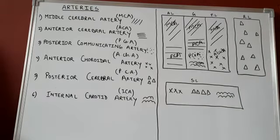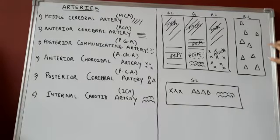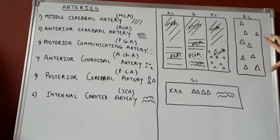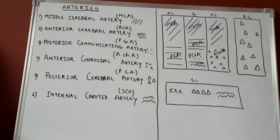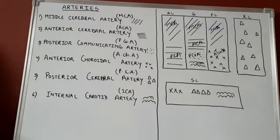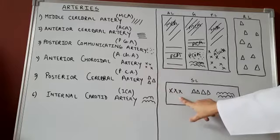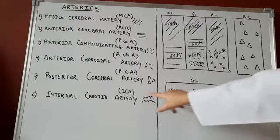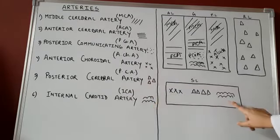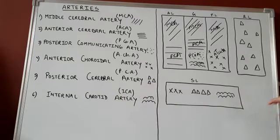Now, talking about the retrolentiform part: it will be supplied by only one artery, and that is the posterior cerebral artery. As you can see in this box, I have drawn only triangles, indicating that the retrolentiform part is supplied only by the posterior cerebral artery. Now, heading to the sublentiform part: it is supplied by three arteries — the anterior choroidal artery indicated by a cross, the posterior cerebral artery indicated by triangles, and lastly the internal carotid artery indicated by a wavy pattern.